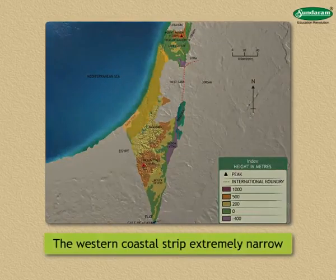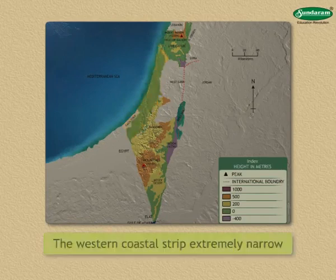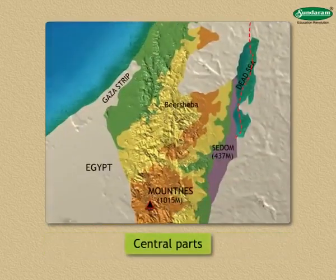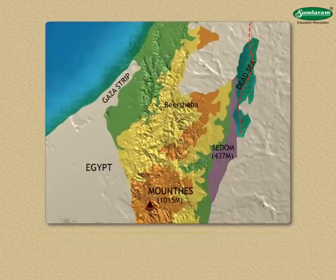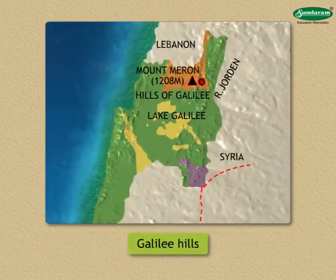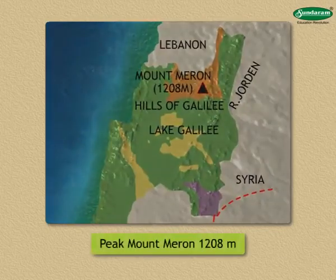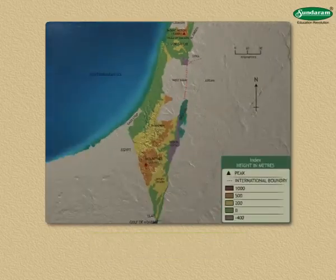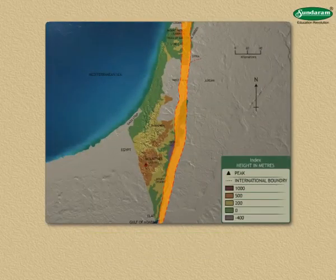The western coastal strip is extremely narrow. The northern and central parts are at a higher altitude. The Galilee hills form the highest region in Israel. The peak Mount Meron is 1,208 meters above sea level.